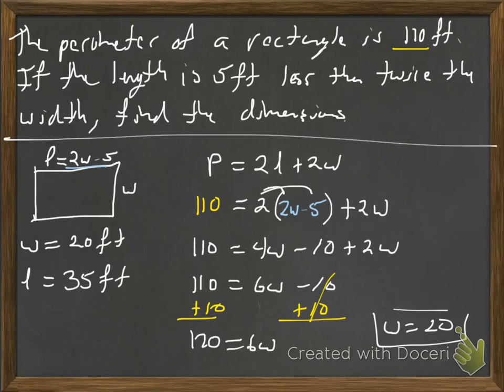So if I add up my 2 lengths, that's 35 plus 35, that's 70. If I add up my 2 widths, 20 plus 20, that's 40. 70 plus 40 is 110, so it checks out.